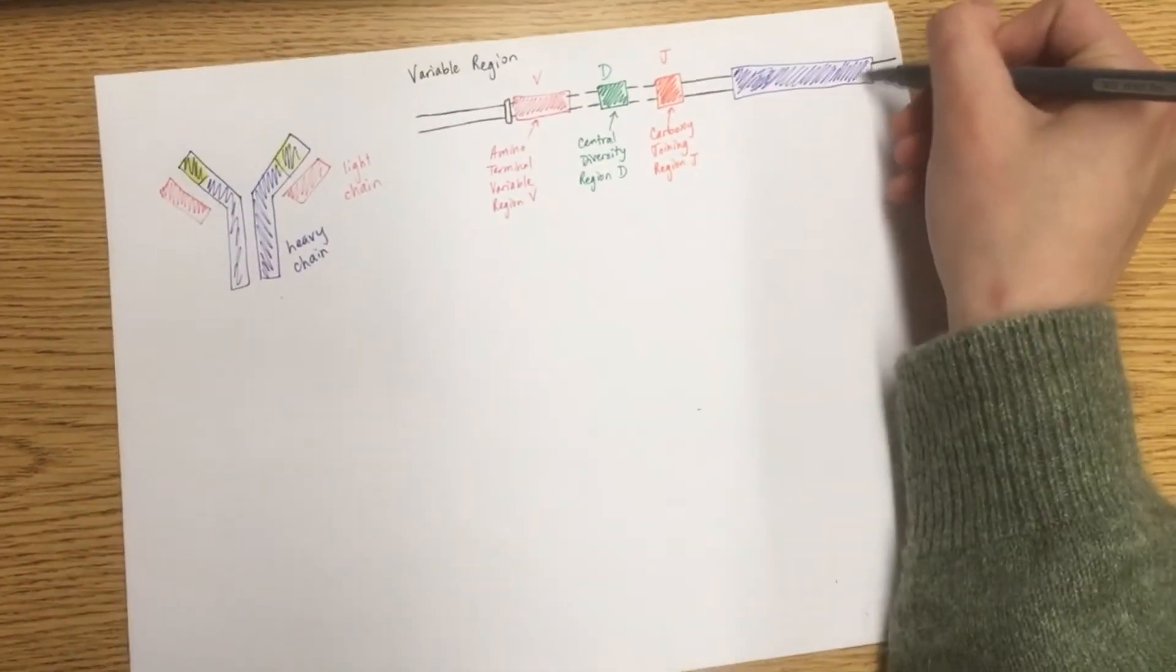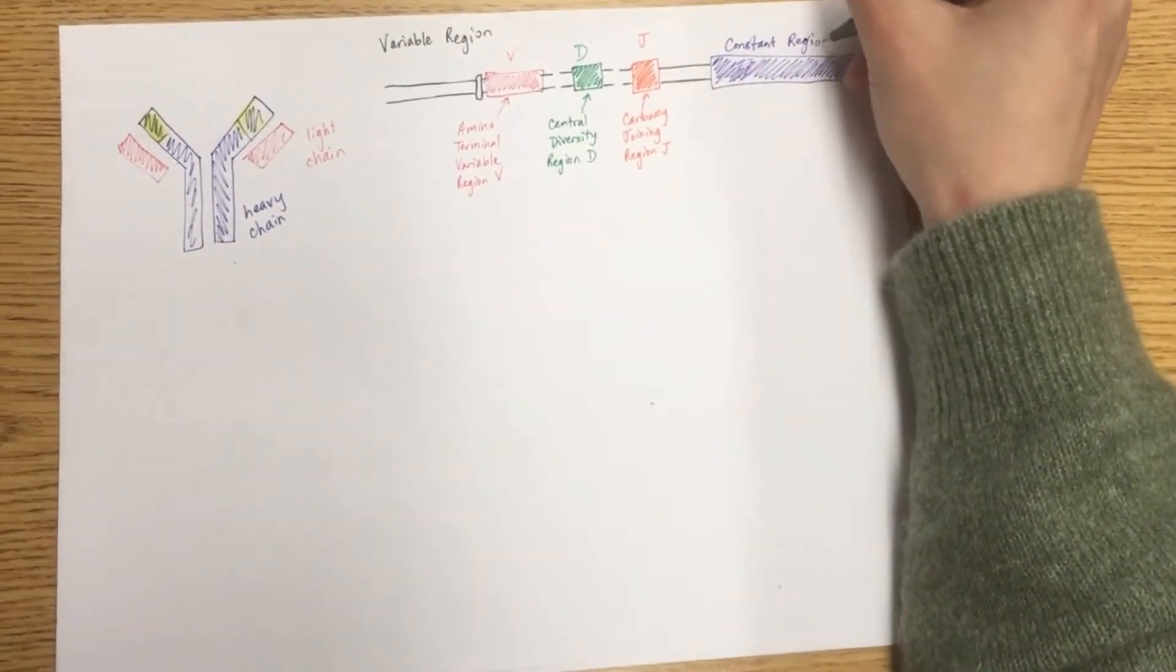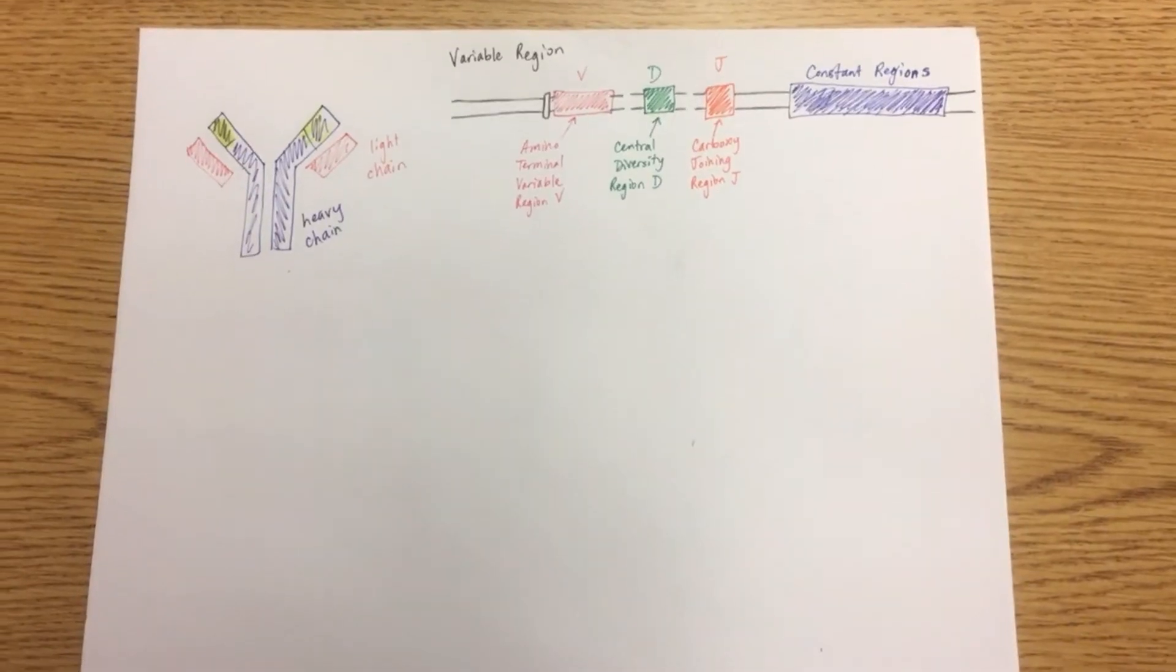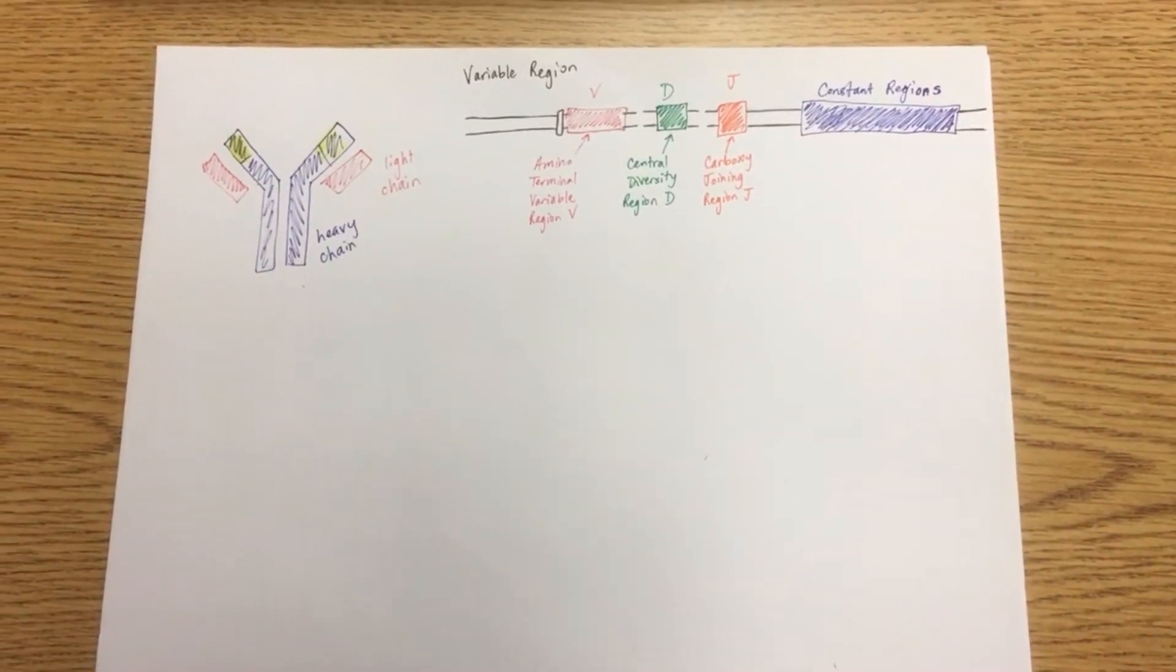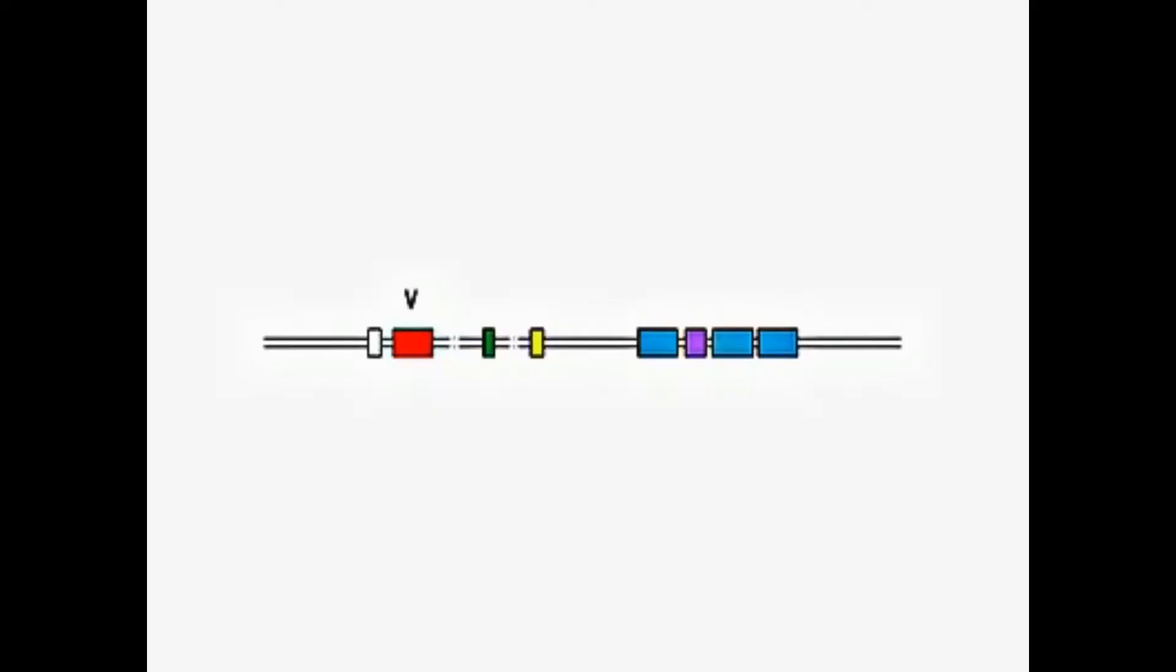Light chains only have the V and J regions. The constant domain has several constant regions, but only one is used when determining the type of heavy chain. The heavy chains have V, D, and J regions, while the light chains only have V and J regions.